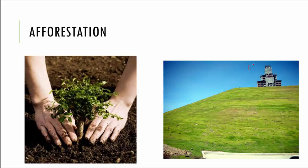If it rains on top of a hill, the water that flows down shouldn't drag all the soil with it. When you grow grass on this sloped land, water will just flow whereas the grass will hold on to all the soil. So you can see how afforestation is very useful in preventing soil erosion.